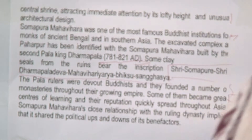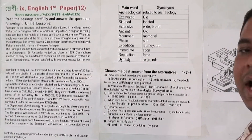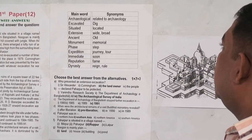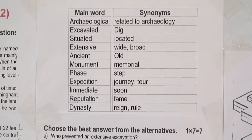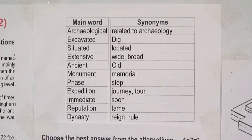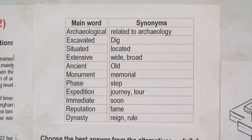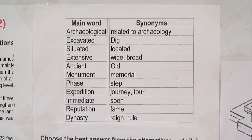Dear students, let me now explain the important vocabulary. 'Archaeological' relates to archaeology. 'Excavated' means to dig or carry out excavation. 'Situated' means located. 'Extensive' means wide or large. 'Ancient' means very old. 'Monument' means a memorial or historic structure. 'Exploration' means journey or investigation. 'Immediate' means instant. 'Reputation' means fame. 'Dynasty' means a ruling family line.